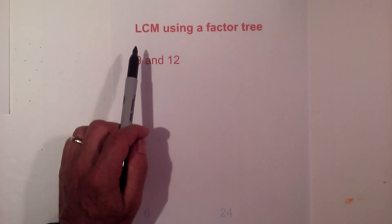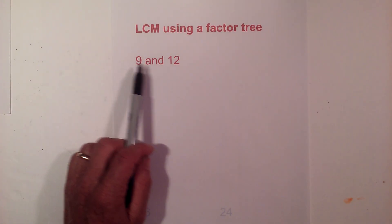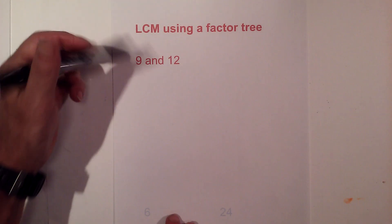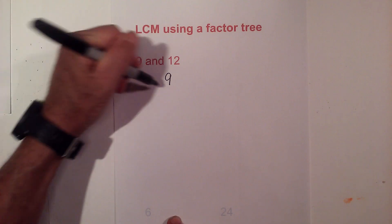In this video I will find the LCM or the least common multiple of 9 and 12. I like to use a factor tree.